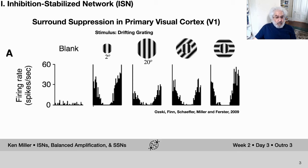When we look at the average firing rate as a function of time across one cycle of the drift of this drifting grating, we see that in the appropriate parts of the cycle there's a nice strong response. However, the region surrounding the receptor field, called the surround - stimuli there don't drive the neuron, but they can suppress responses to center stimuli. When we expand the stimulus into the surround to a 20-degree diameter stimulus, the response is strongly suppressed. That's surround suppression.